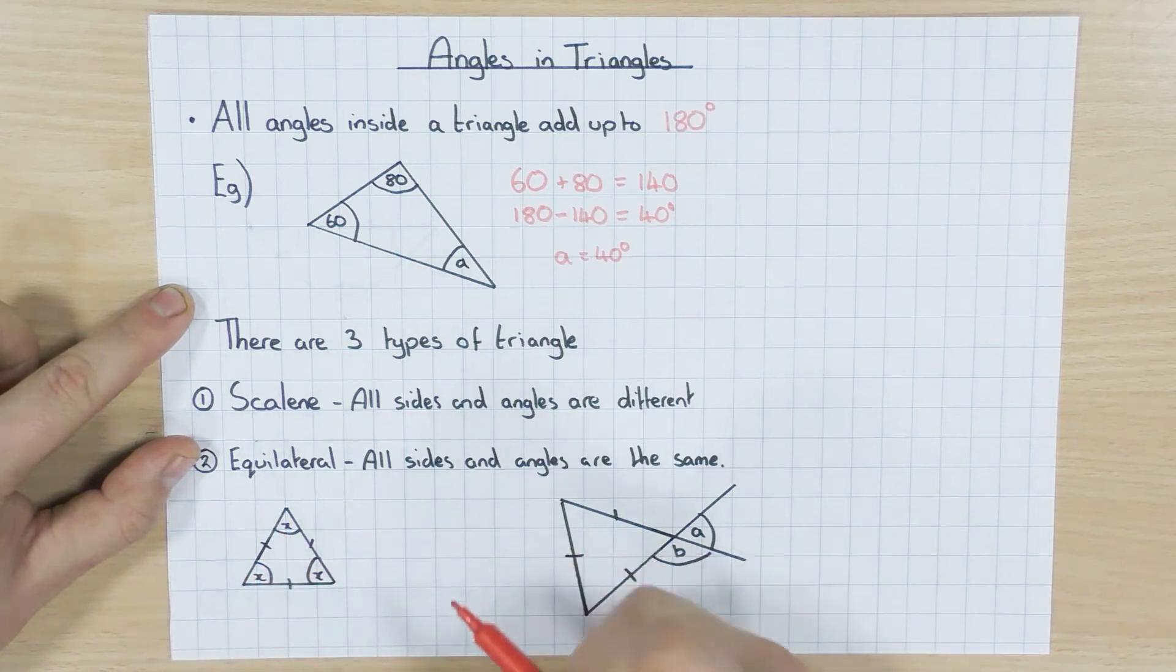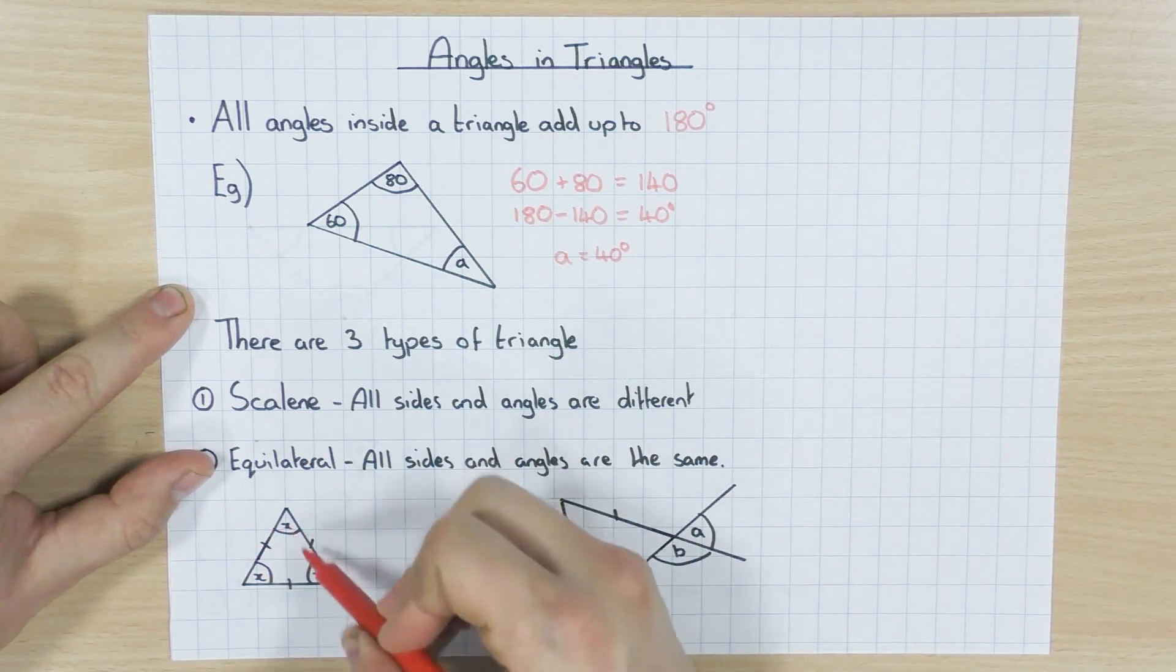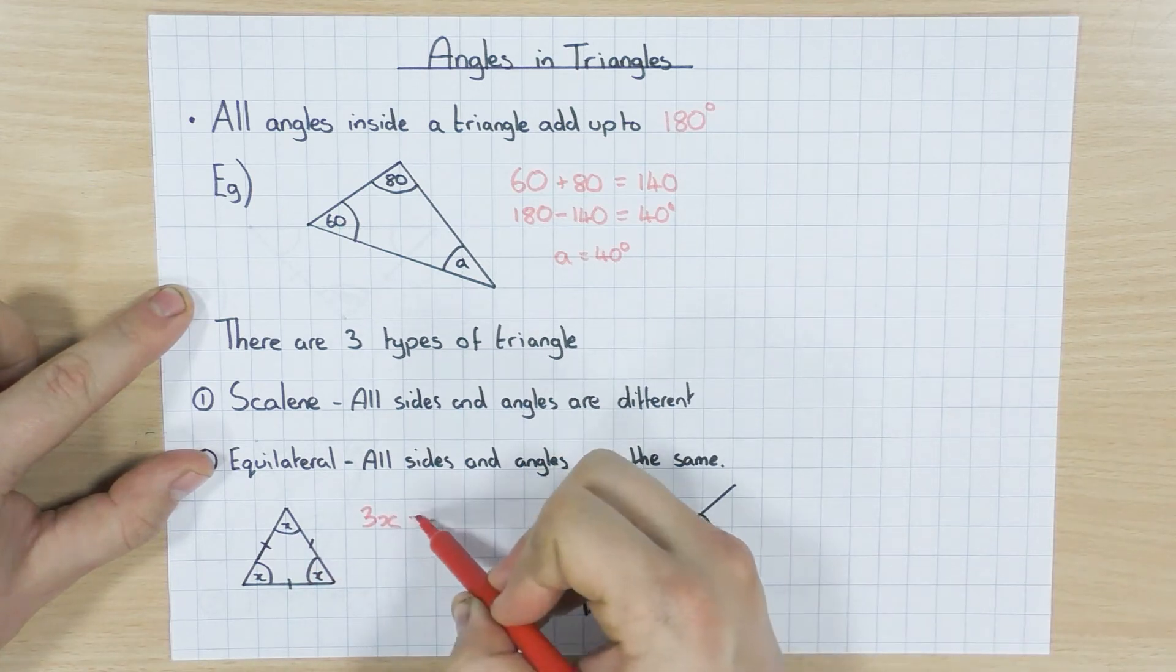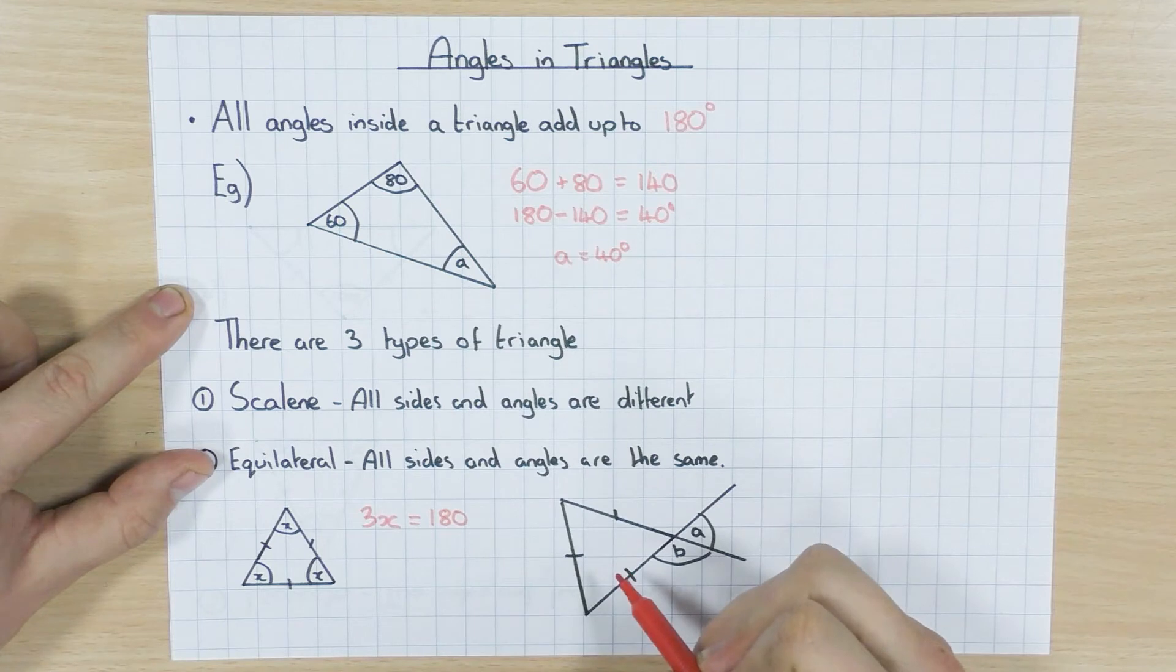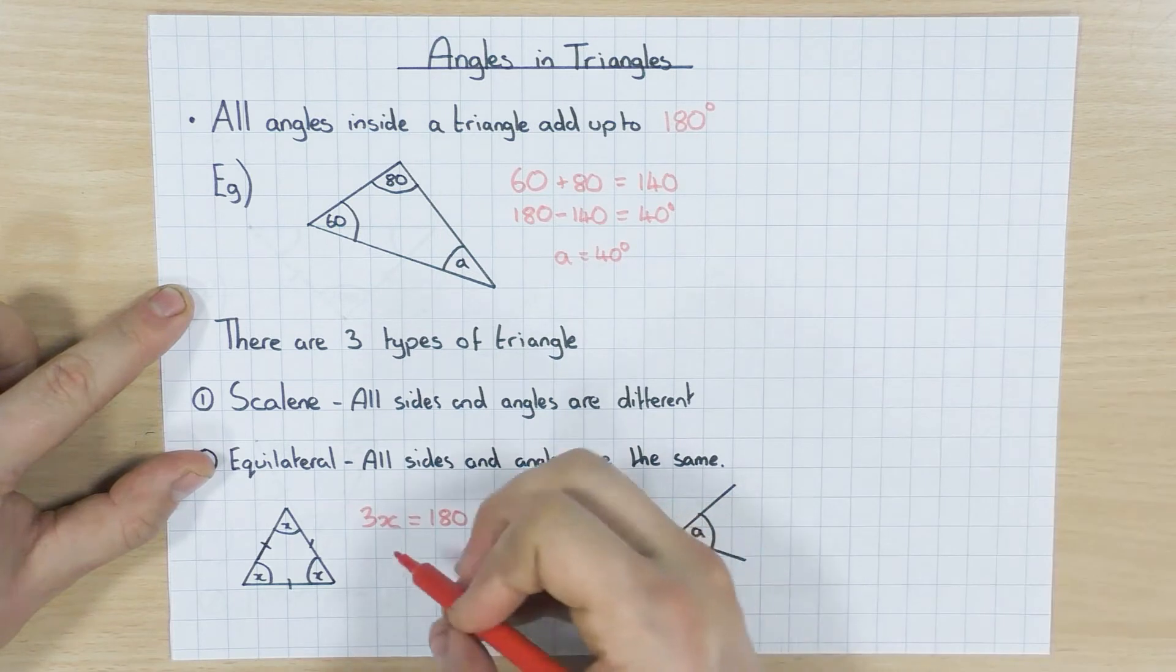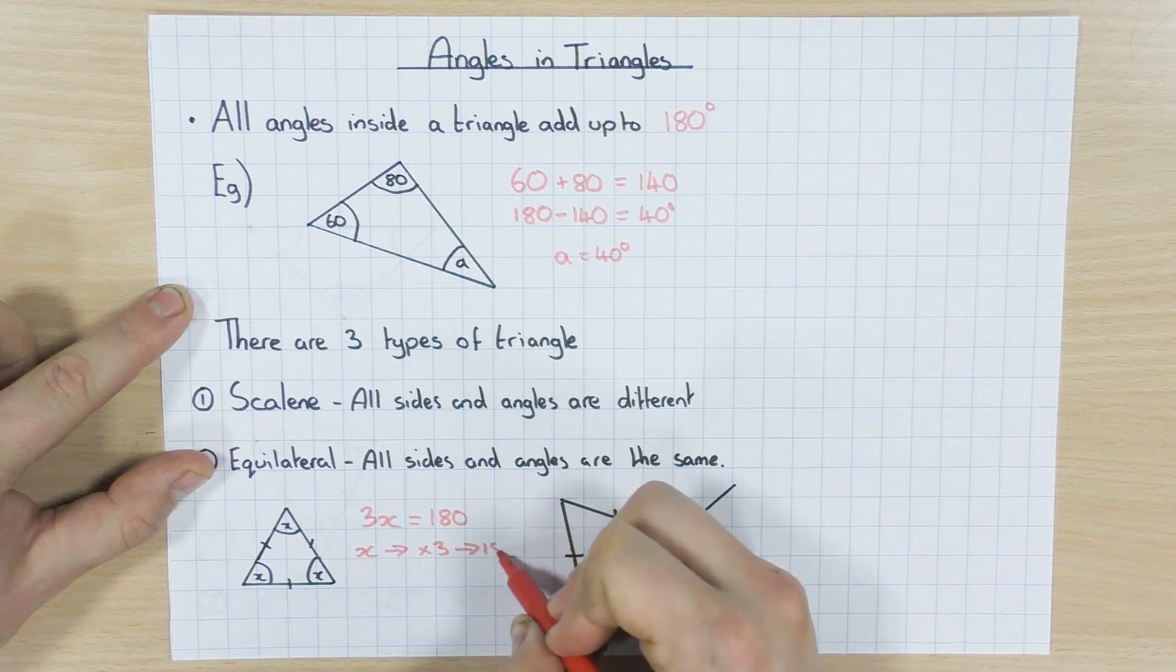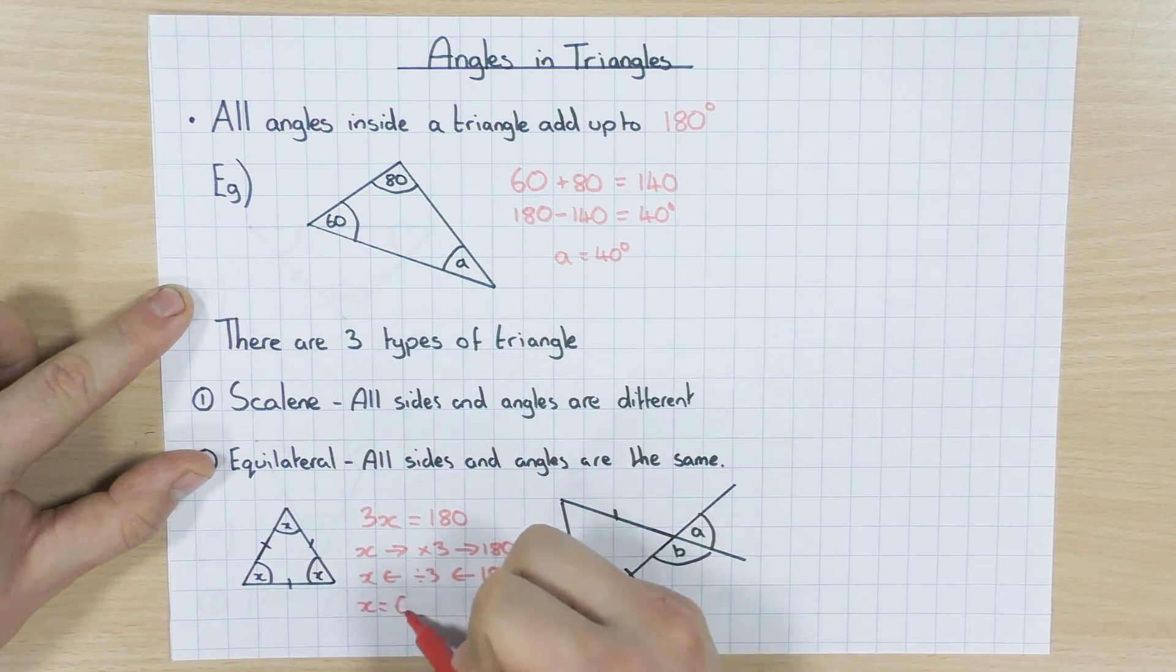And I know that all the angles are the same, because x, all the same variable. So to do this, different ways you can do it. If I add up all three angles, I'm going to have 3x. And I know that all the angles in a triangle add up to 180 degrees. So I can say 3x equals 180. And you can solve this by doing the balance method, or solve it using the flow chart. I'm just going to do a flow chart. So x times by 3 gets me to 180. And then 180 going backwards, so do the opposite. Divide by 3 gets me back to x.